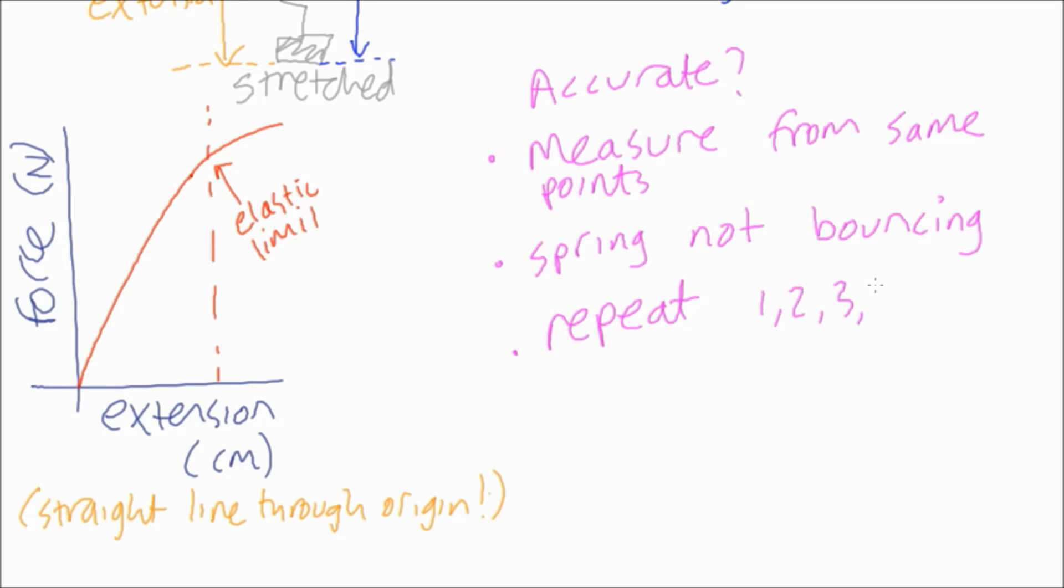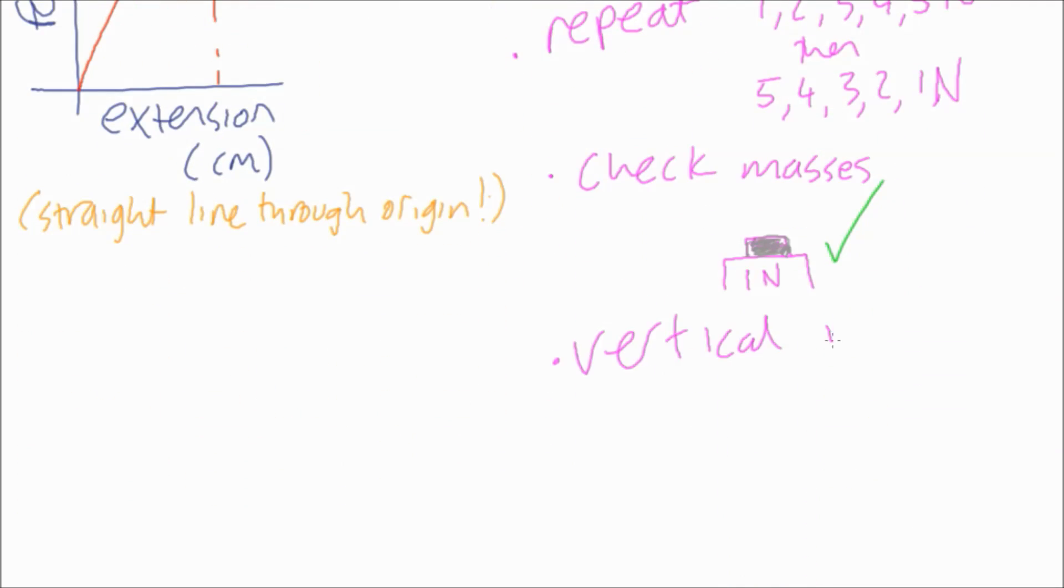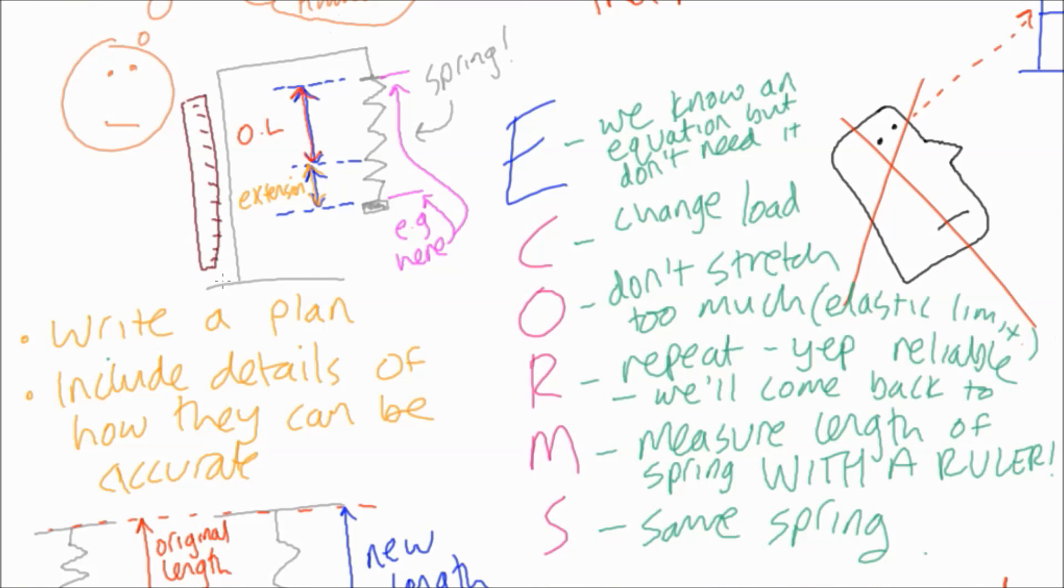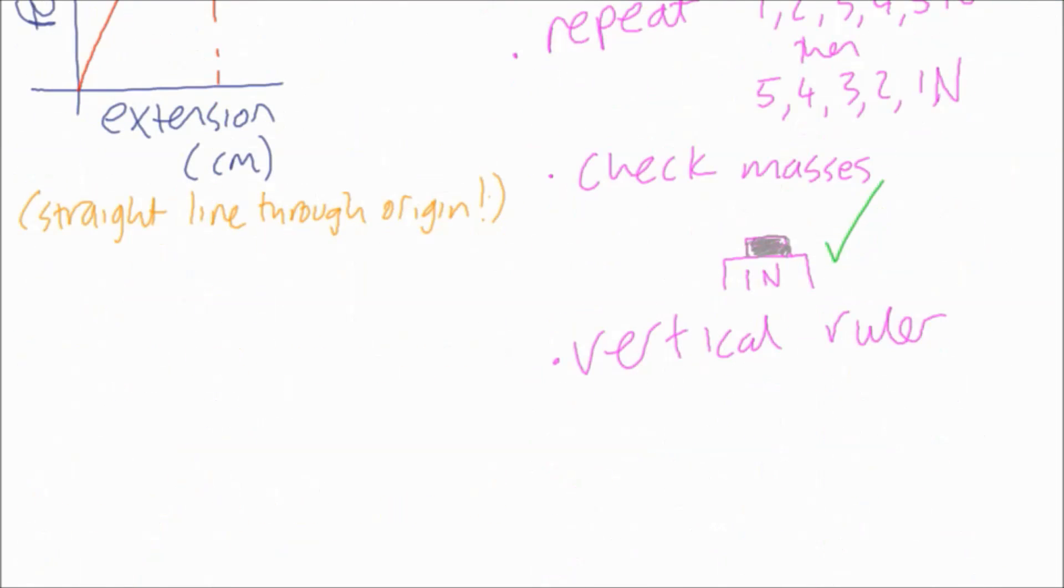Making sure the spring isn't bouncing around is quite useful. You could repeat the reading, so we mentioned we come back to repeat of CORMS by going back on yourself, so loading it up to say five newtons and then unloading it back to zero newtons. You could check the value of the masses, put them on a balance, see if they actually are one newton. You could ensure the ruler is vertical, because if you've got a wonky ruler or if you're looking at things wonky, you could have parallax errors, and of course we want to avoid parallax errors at all costs.